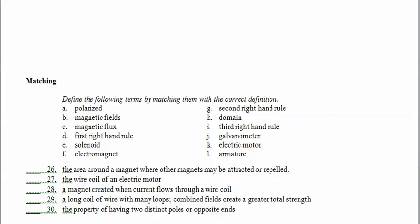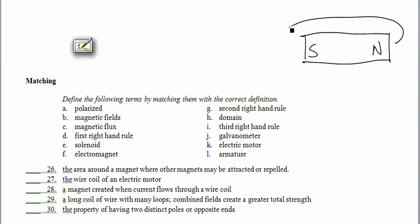Alright, we've got some matching here. The area around the magnet where other magnets may be attracted or repelled. Well, what do we call the area around a magnet? So here's my magnet. And we've got a north end, let's say, and a south end. And the field is going from north to south. What do we call this area here around the magnet? Well, the area around the magnet is indeed the magnetic fields.